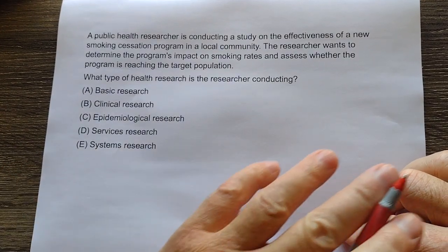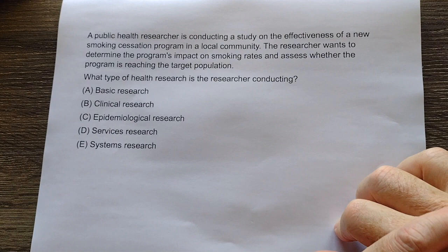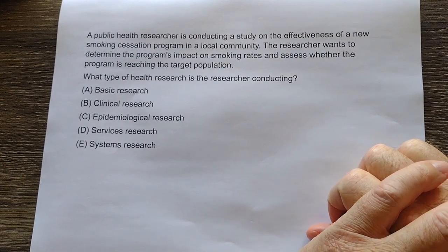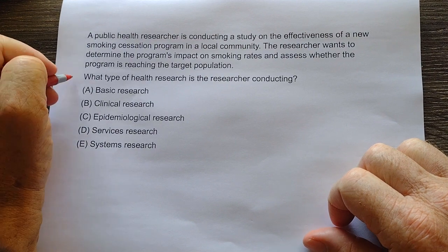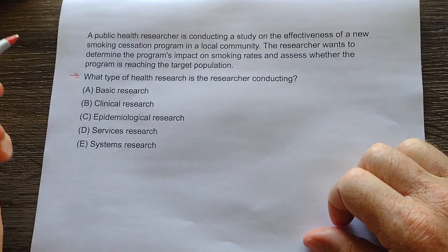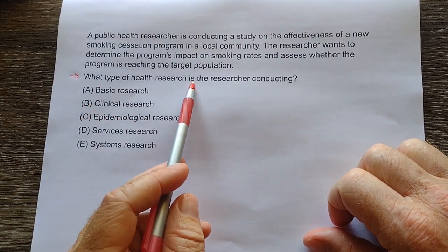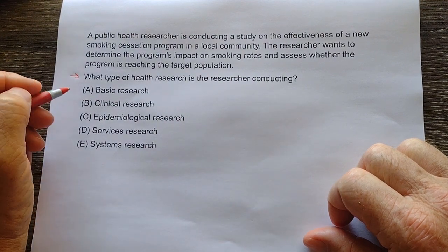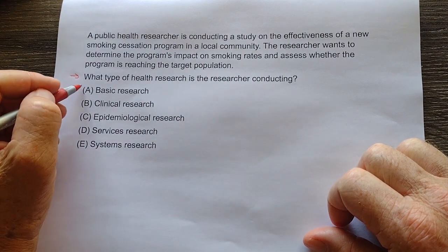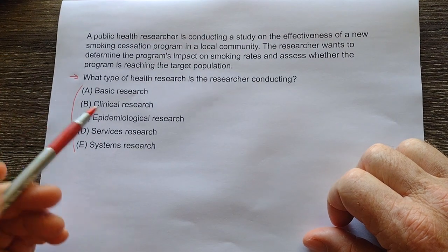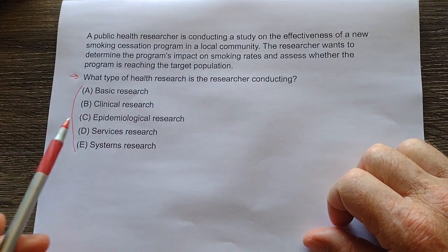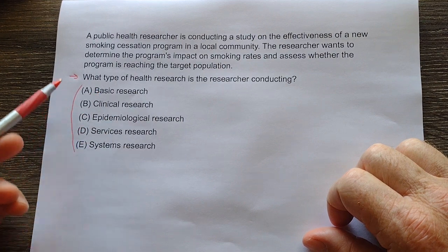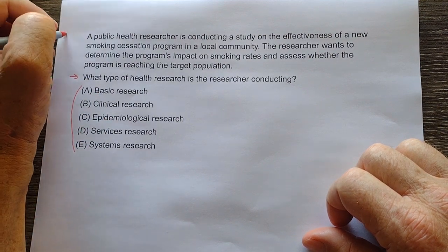All right, this is Dr. R again, looking at some epi questions. This one's going to start off again — if you want to look at the lead-in, this would be the lead-in: what type of health research is the researcher conducting? Or what I usually do is look at the answer choices first, going through the answer choices so I know that these are different kinds of research, and then I would go back to the question stem.